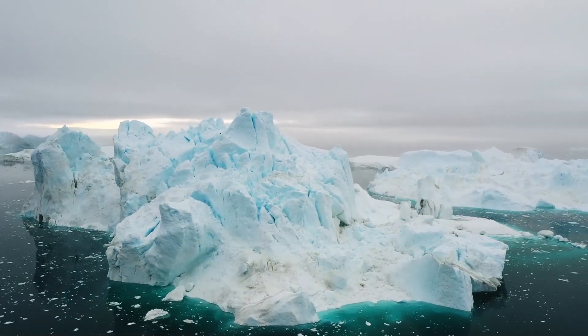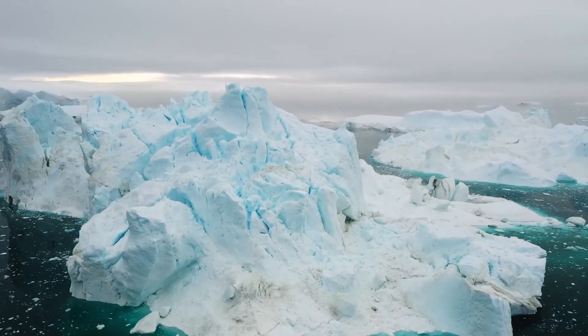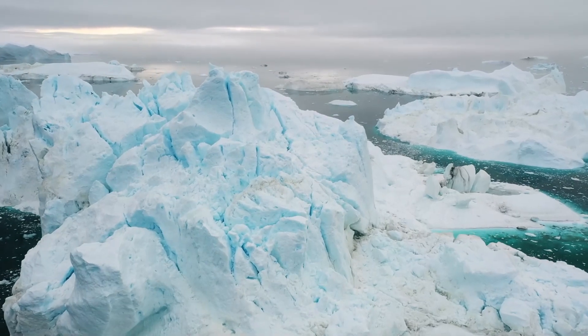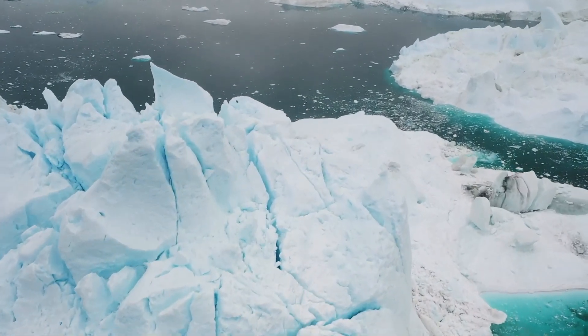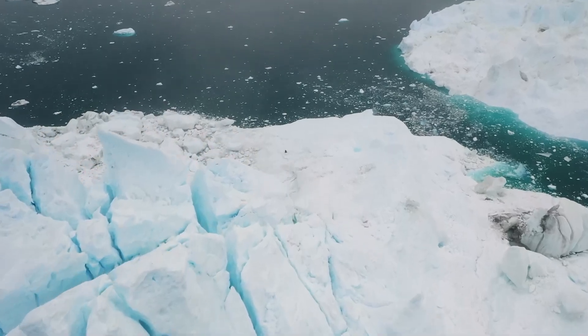However, this effect is smaller than the first one because the water is less dense than the ice and has a smaller impact on the Earth's shape. Therefore, the net effect of the melting of the polar glaciers is to slow down the Earth's rotation, but not by much.